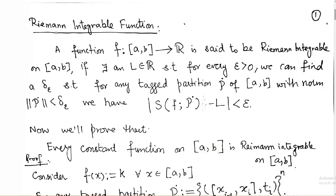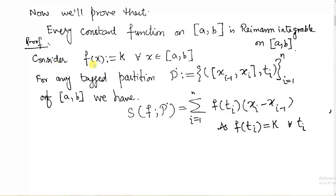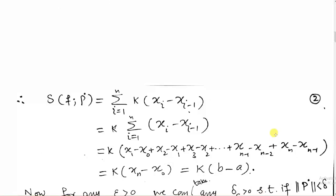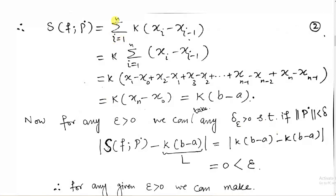The first example: a constant function on a closed interval [a, b] is Riemann integrable on this interval. Consider the constant function f(x) = k for all x in the closed interval [a, b]. For any tagged partition p-dot containing sub-intervals [x_{i-1}, x_i] with tags t_i, i from 1 to n, we form the Riemann sum S(f, p-dot), which equals the sum of f(t_i) times the lengths of sub-intervals. Since f(t_i) = k for all t_i,